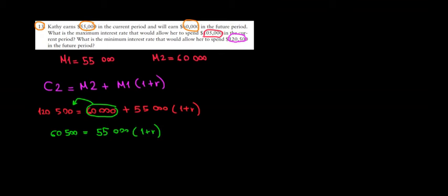Now what does that mean? That means that 1 plus R is equal to $60,500 divided by $55,000. And what's $60,500 divided by $55,000, if we cancel them out, that's equal to 1.1, which means that 1 plus R is equal to 1.1.